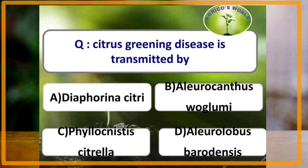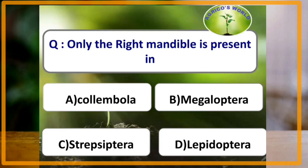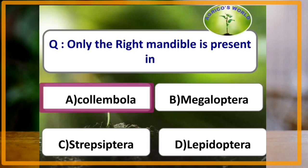Malaya disease in coconut rhinoceros beetle is caused by Baculovirus. Citrus greening disease is transmitted by Diaphorina citri. Only the right mandible is present in Collembola.